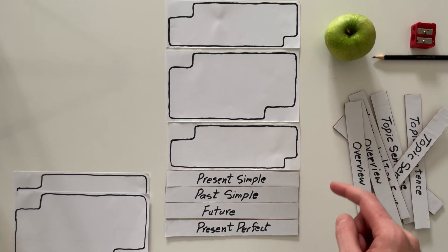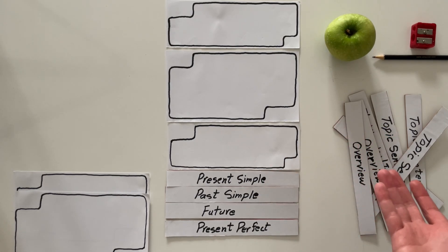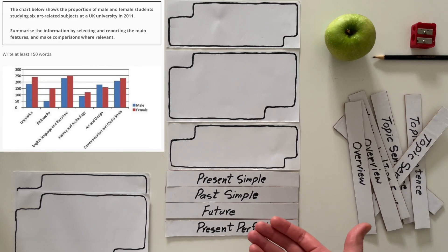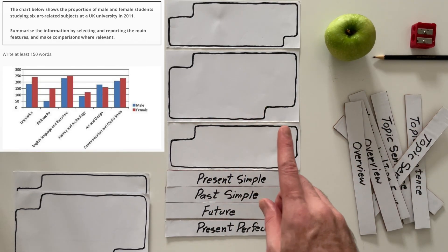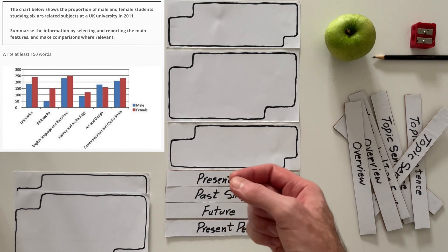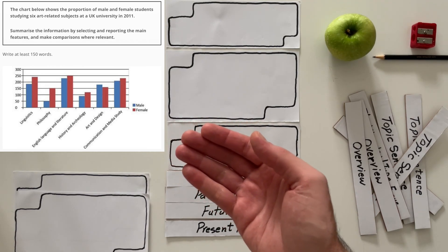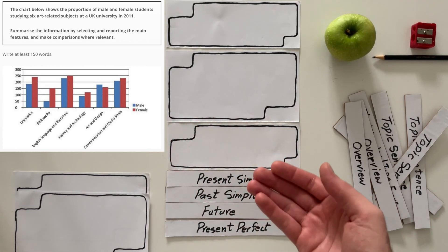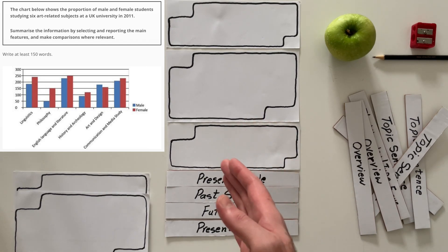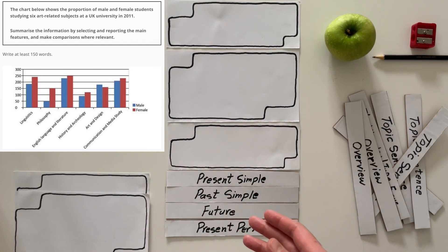Hi there and welcome to this episode of Write With Me at IELTS Juice. This time we have a report and the rubric here has only one visual. It says the chart below, which is a bar chart, shows the proportion of male and female students studying six art-related subjects at a UK university.